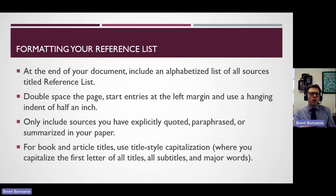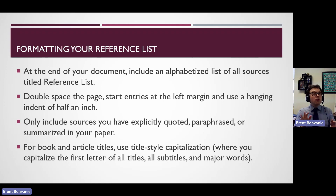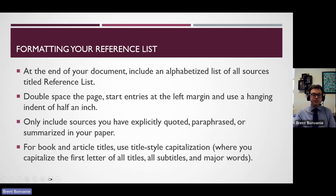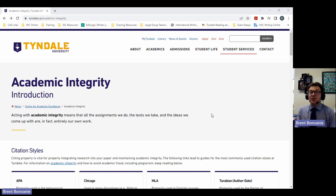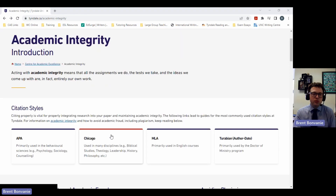It's important to remember that your reference list only includes sources you've actually used — things you've quoted, paraphrased, or explicitly cited in your paper. If you read an article that adjusted your thinking but you never referenced it, don't include it. Also use title style capitalization, where all major words are capitalized as well as the first letter of your title and subtitle. Rather than giving you a lot of verbal explanations of reference entries, I want to show you the academic integrity pages on the Tyndale website where you can get this information for yourself. That's tyndale.ca/academic-integrity.